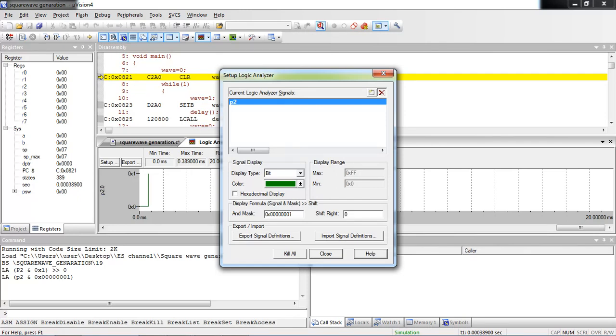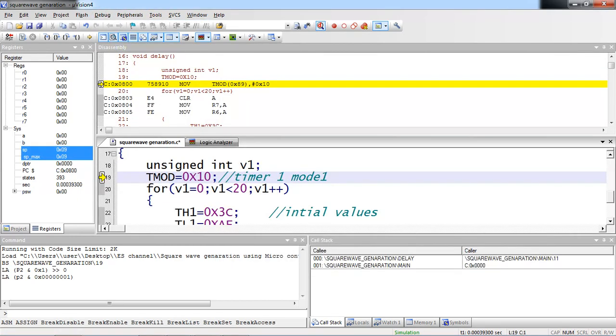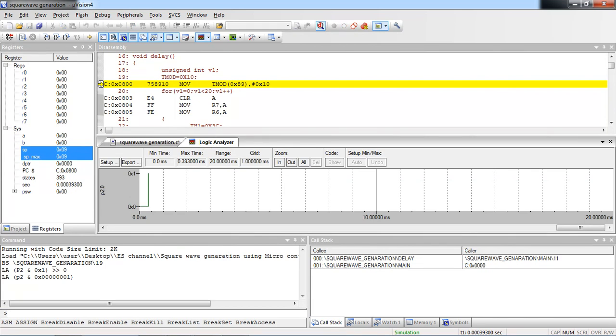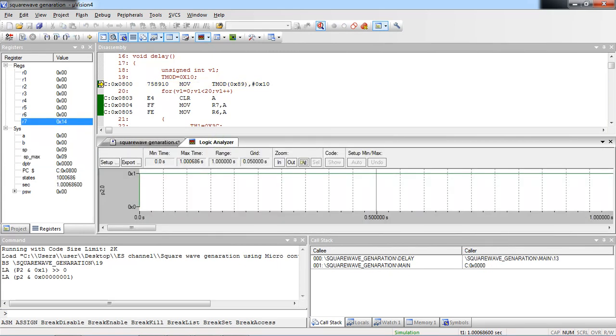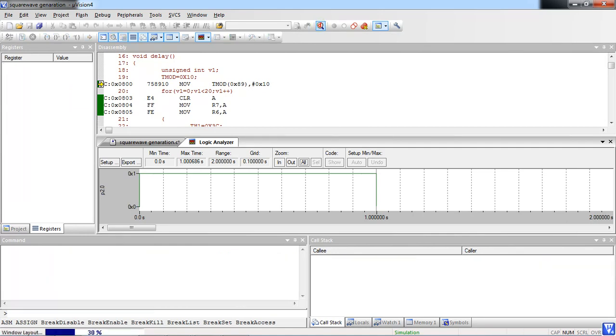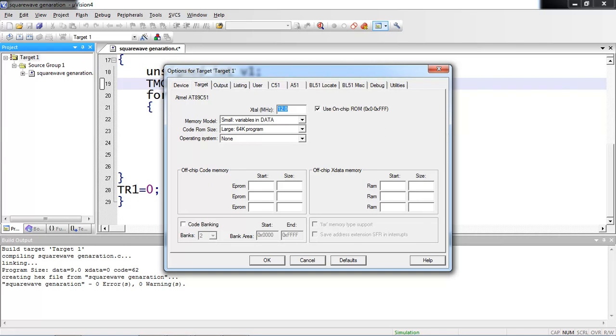Now, you can run your output. Go debug tab and use run option. This will show you the square wave. You need to fix your oscillator frequency. That is also very important from this.